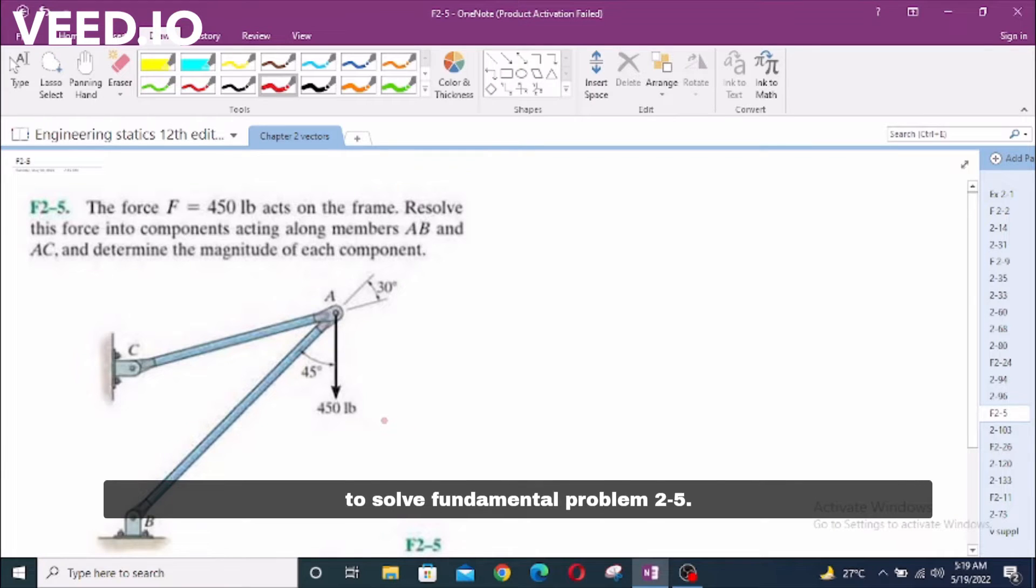In this video we are going to solve fundamental problem 2-5. The problem says the force F equals 450 lb acts on the frame. Resolve this force into components acting along members AB and AC and determine the magnitude of each component.